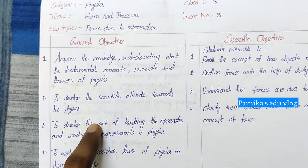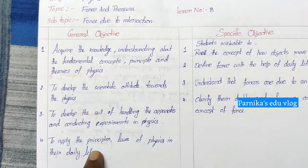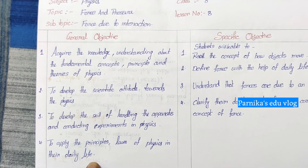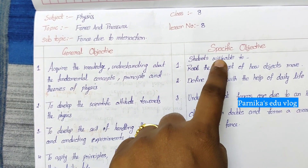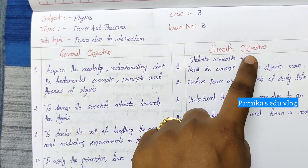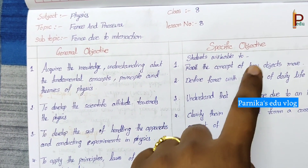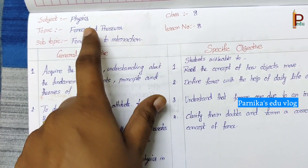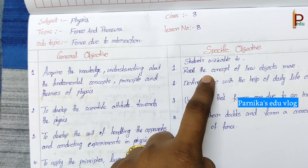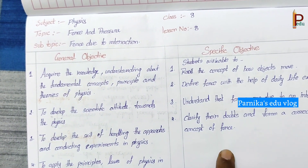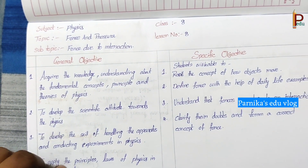These are the few lines we have to mention in the general objective column. And next, specific objective — here we have to write the specific objectives related to the particular chapter.